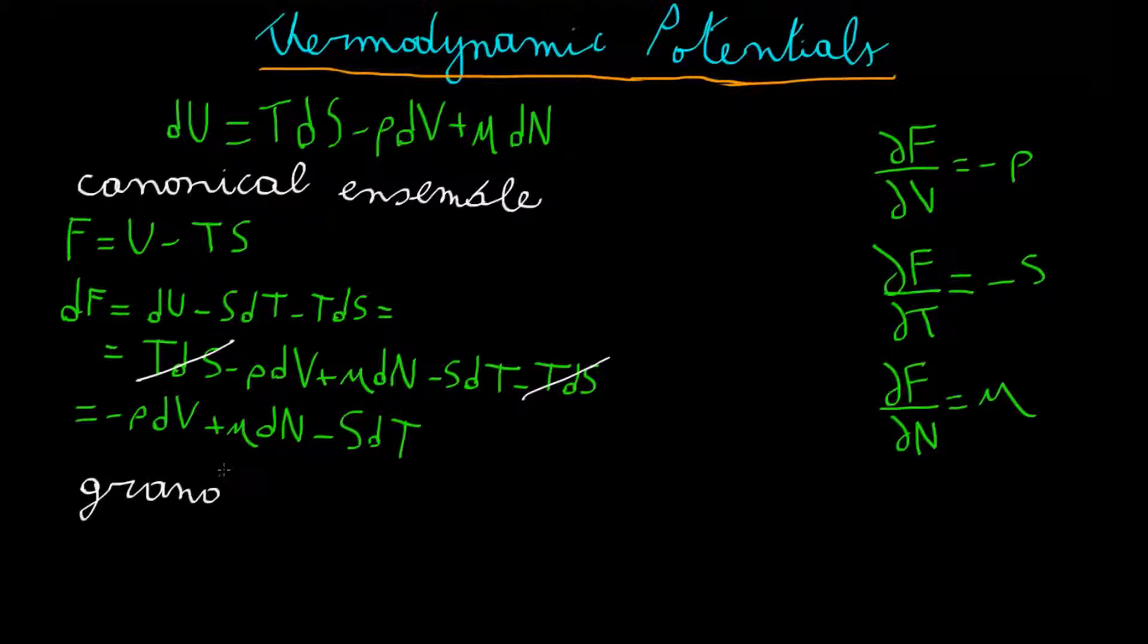Finally, the last thermodynamic potential we will need is the one relative to the grand canonical ensemble. That is, we want a thermodynamic potential whose derivative depends on T, V, and the chemical potential mu, instead of T, V, and the number of particles N.